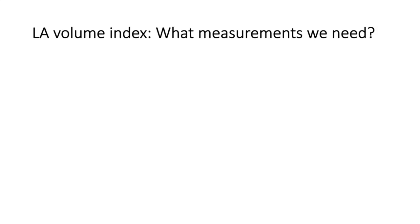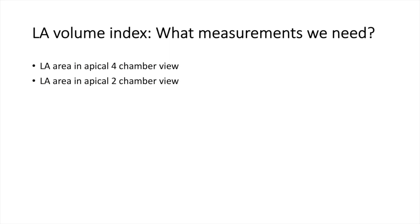What measurements do we need to calculate the left atrium volume index? We need the left atrial area in the apical four-chamber view, the left atrial area in the apical two-chamber view, and the LA length from either of these views. We also need the patient's height and weight so we can index the volume.